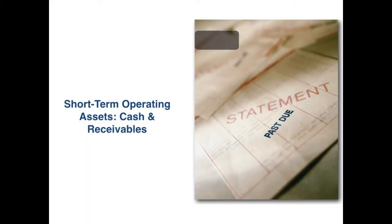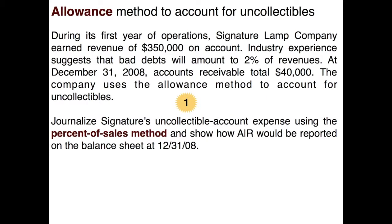In this video on short-term operating assets — cash and receivables — we're going to focus on the allowance method, specifically one of the allowance methods: the percent of sales method. We're talking about estimating the amount of accounts receivables we're not going to collect. GAAP approves two allowance methods, and this method will create a contra asset account called allowance for doubtful accounts or allowance for uncollectible accounts.